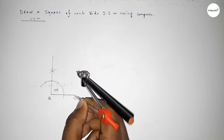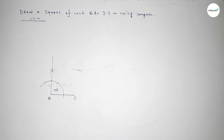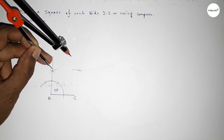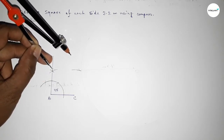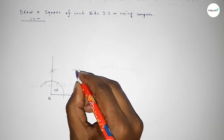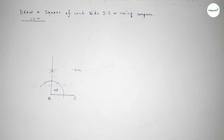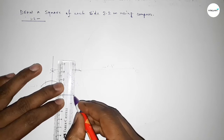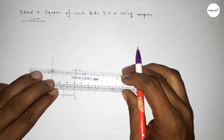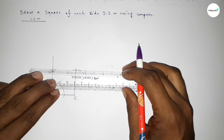Putting the compass on point C and drawing an arc with the same length, cutting here so both curves intersect at a point. Now joining this line, then joining this line to complete the square.